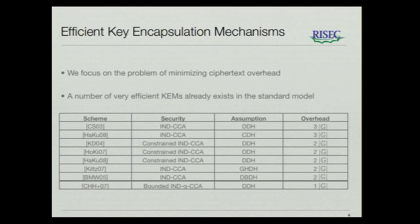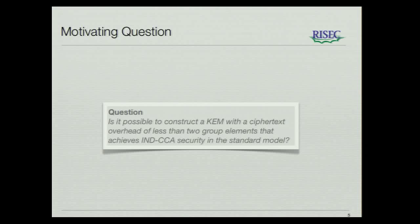This is a table of the currently most efficient KEMs defined in prime order groups. We can see that we can obtain IND-CCA security based on a non-interactive assumption with an overhead of three group elements. If the KEM is only required to be constrained IND-CCA secure, then we can reduce the overhead to two group elements. And if we are willing to go to interactive assumptions or groups in which we have a pairing, then we can obtain full IND-CCA security with overhead of two group elements. Looking at this table, it seems fairly natural to ask: is it possible to construct a KEM which is IND-CCA secure and which has a ciphertext overhead of less than two group elements? We might hope that it's possible to construct a KEM which has an overhead of just a single group element and some short string.